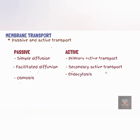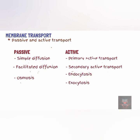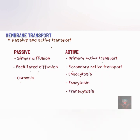During endocytosis, materials move into the cell within a vesicle that is formed from the plasma membrane. In exocytosis, materials move out of a cell by fusion with the plasma membrane of vesicles formed within the cell. Active transport in vesicles can also be used to move substances into, across, and out of the cell — a process referred to as transcytosis, in which vesicles undergo endocytosis on one side of the cell, move across the cell, and undergo exocytosis on the opposite side.